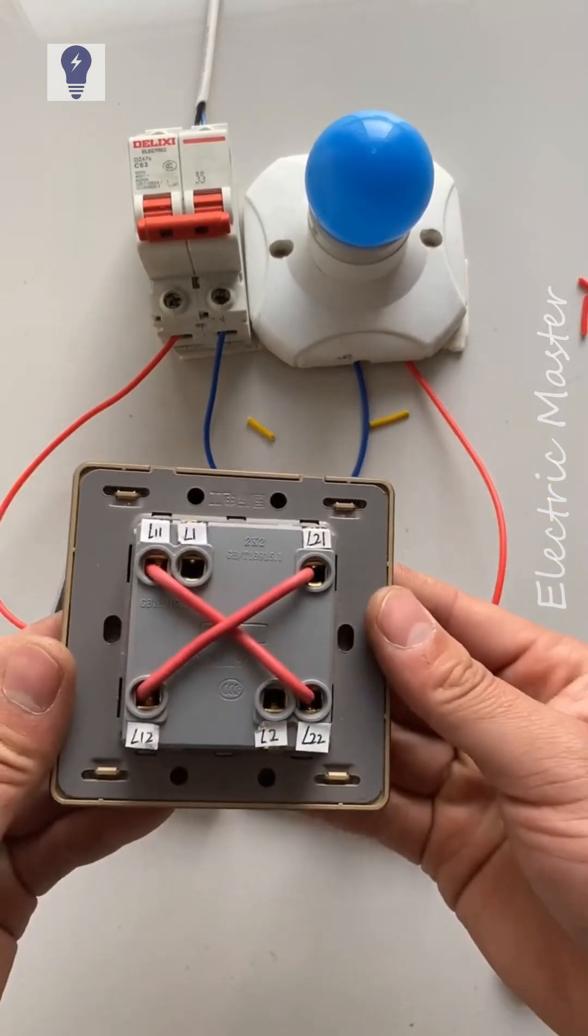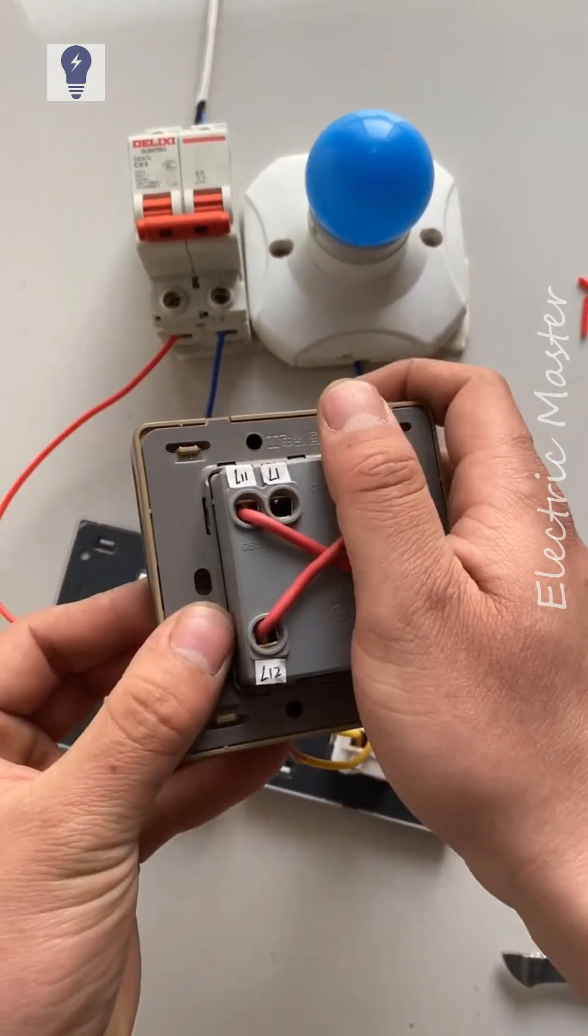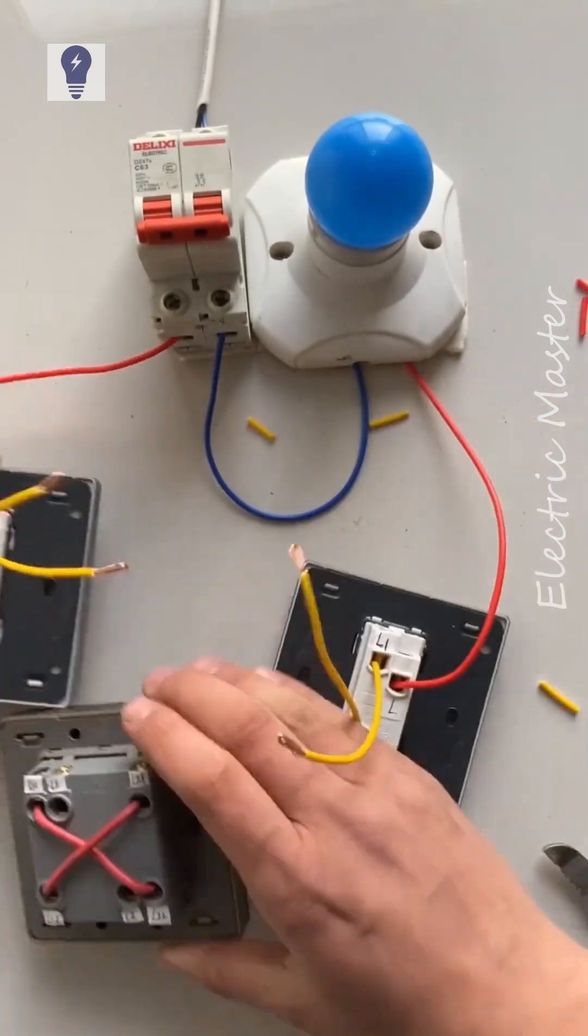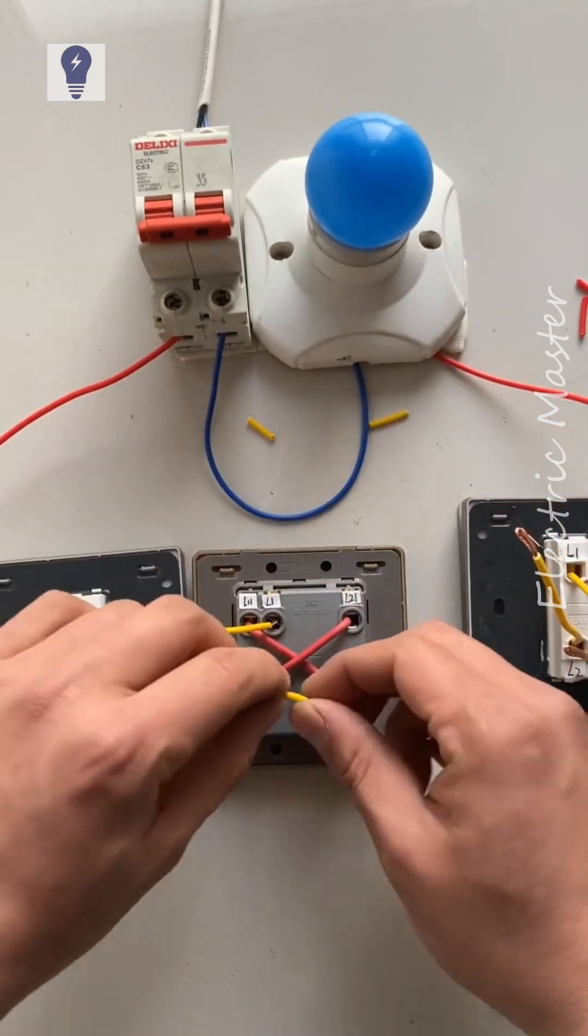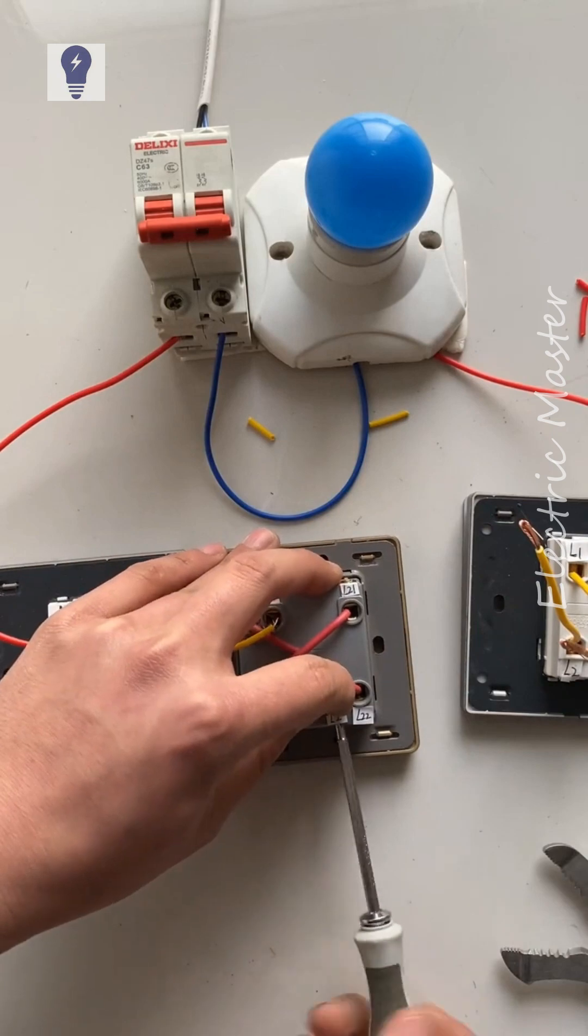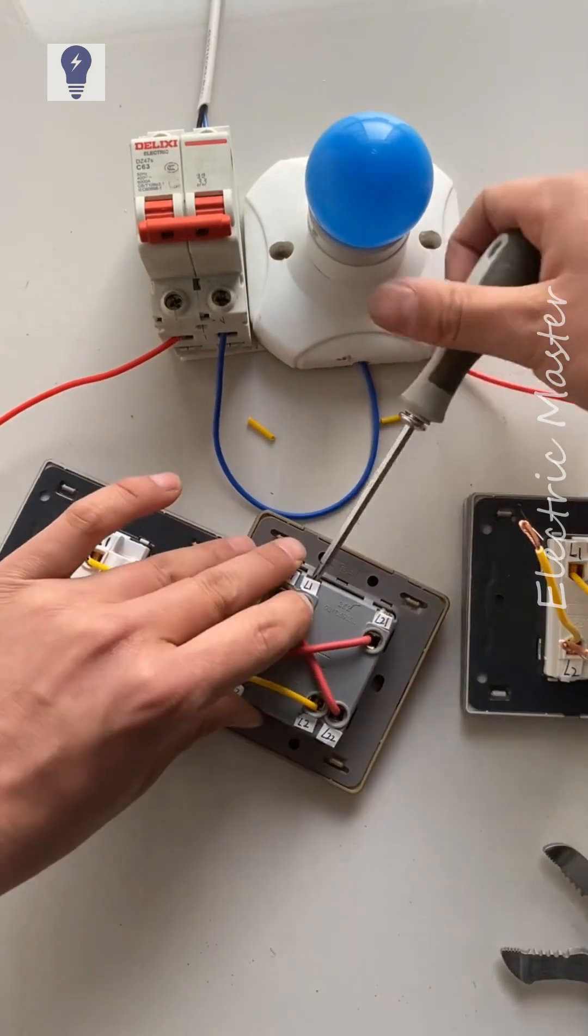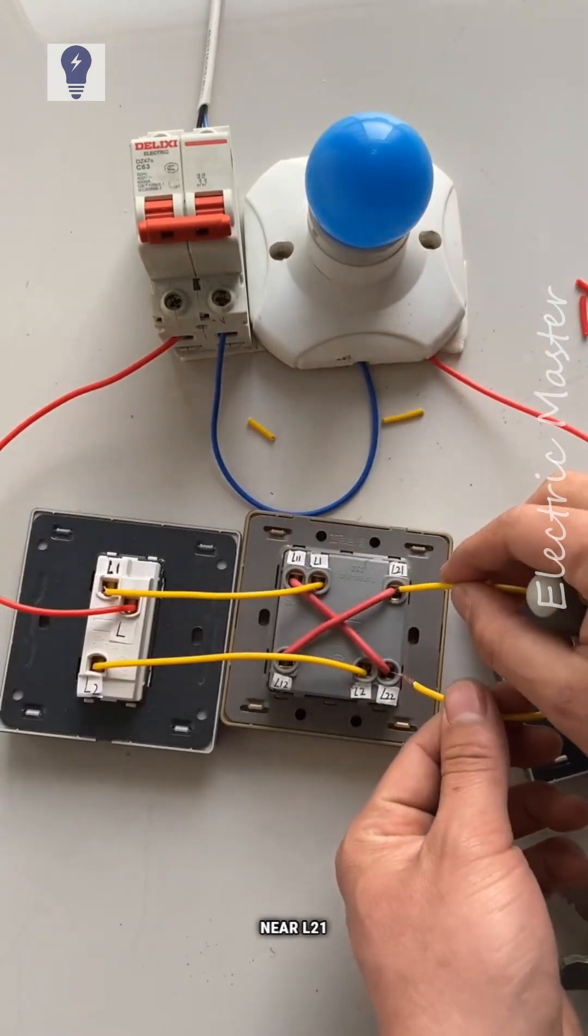One panel front, six holes back. One group here, one group there. Top group near L1 and L2. Bottom group near L21 and L2.